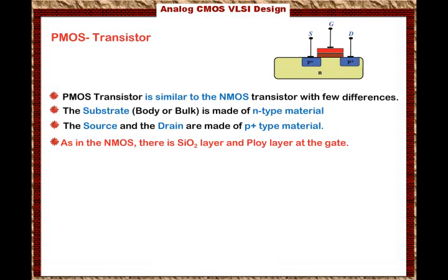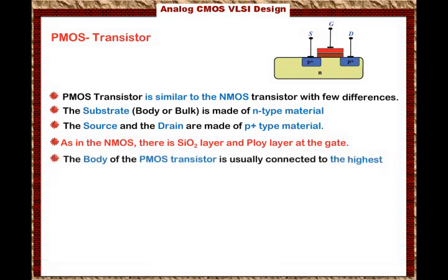Finally, the body of the PMOS is usually connected to the highest voltage in the circuit. As shown in the animation, we have heavily doped N-type material connected to the body, and the body of the PMOS transistor is connected to the highest voltage in the circuit.